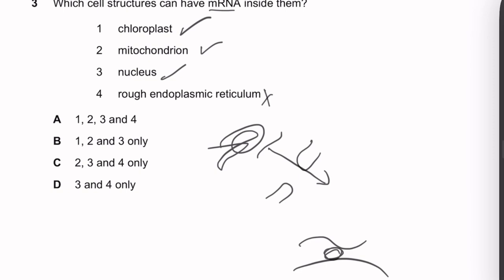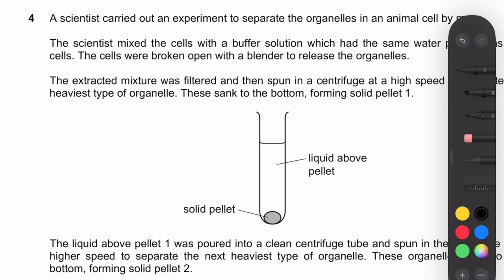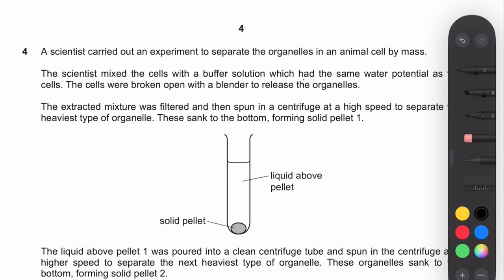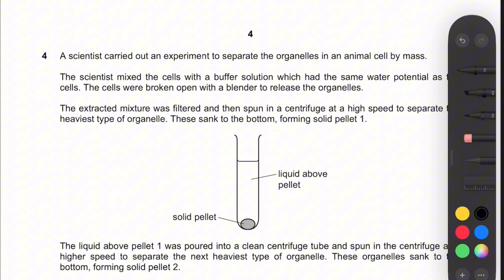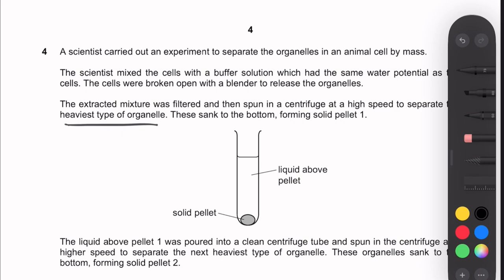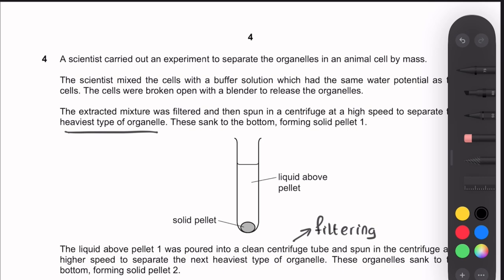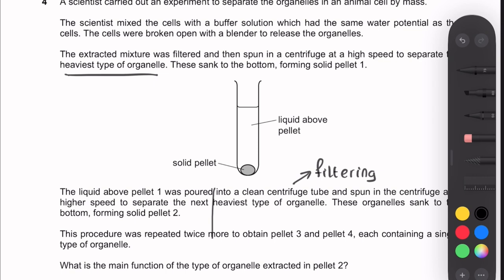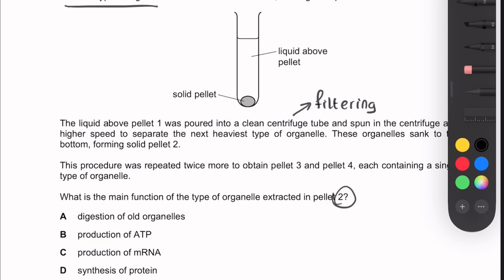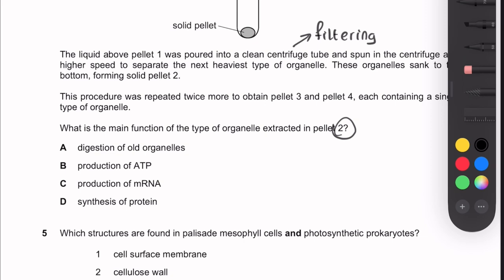Question 4: A scientist separated organelles in an animal cell by mass using differential centrifugation. Cells were mixed with a buffer of the same water potential, broken open with a blender, filtered, and spun at increasing speeds. The heaviest organelle sank first to form pellet 1, and the liquid above was re-spun at higher speed to form pellet 2, and so on for pellets 3 and 4. What is the main function of the organelle in pellet 2?